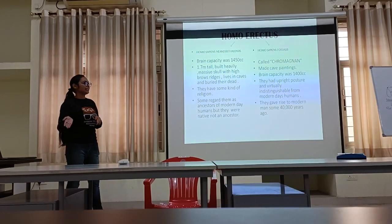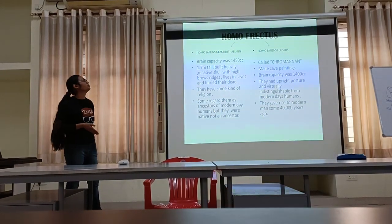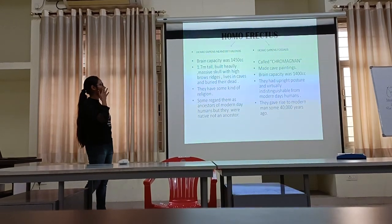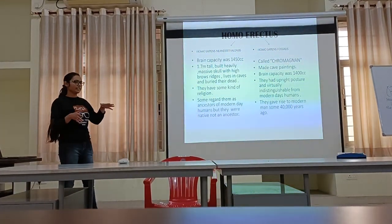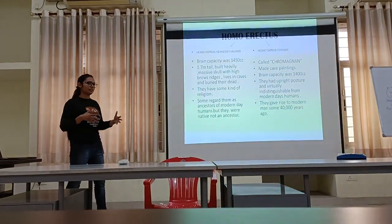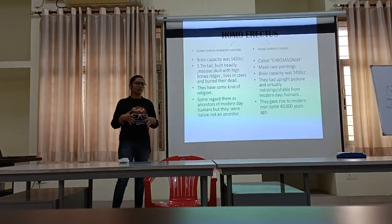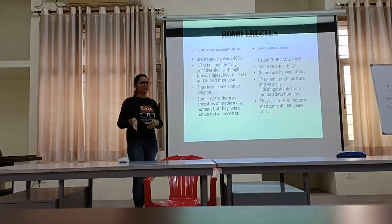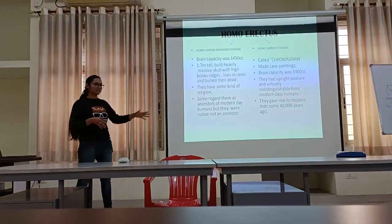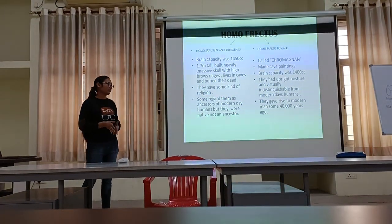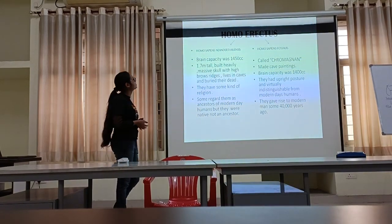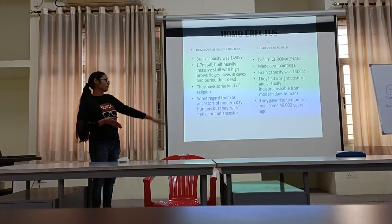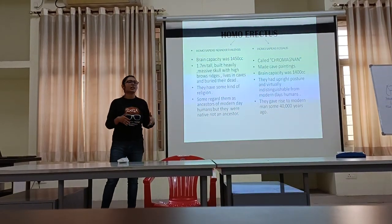Homo habilis gave rise to Homo erectus, and Homo erectus gave rise to Homo sapiens neanderthalensis and Homo sapiens fossilis. Homo sapiens neanderthalensis are supposed to be 1.7 meters tall with a heavy or bulky body. Some regard them as the ancestors of modern humans, Homo sapiens, but they are not the modern humans — they are actually the ancestors of modern humans. Next is Homo sapiens fossilis, called the Cro-Magnon man, who gave rise to the modern man some 40,000 years ago.